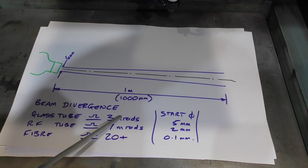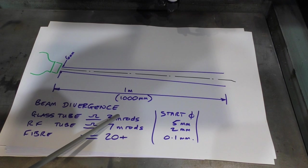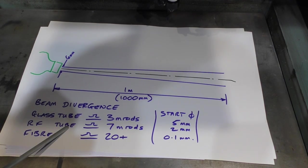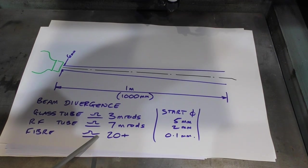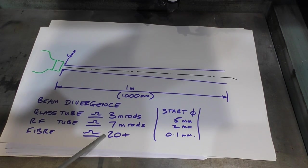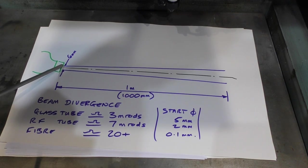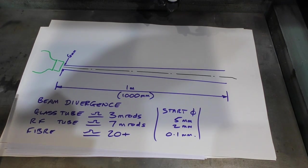when we're talking about a glass tube, it diverges at the rate of something like 3 millirads. The RF tube is more than twice as bad at 7 millirads. And a fibre laser is somewhere up in the stratosphere. It's ridiculous. As soon as the beam escapes from the end of the fibre, it goes bonkers. The basic idea of a beam expander is to catch it as soon as you can and start conditioning